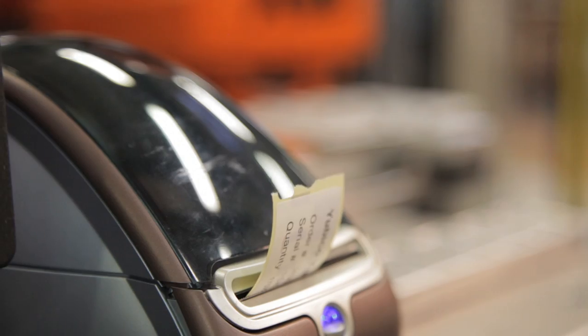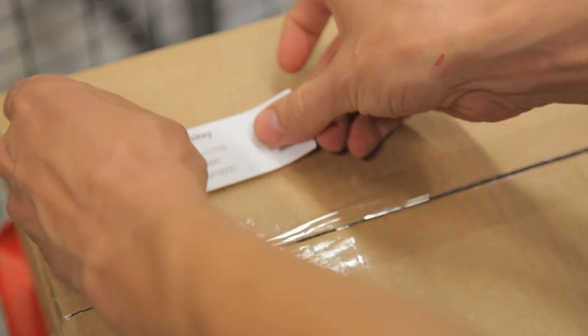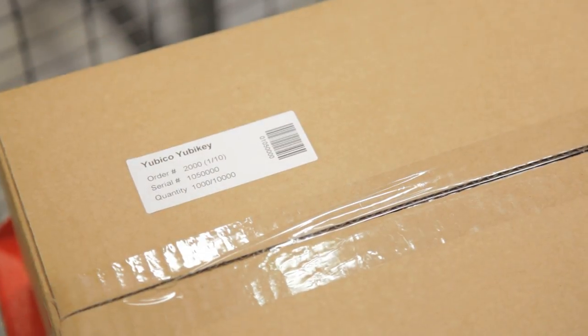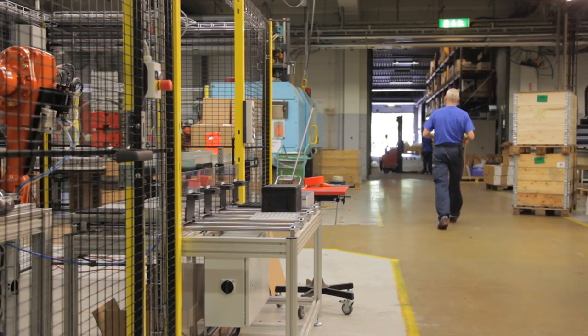For every carton with 1,000 YubiKeys, a label including order information is printed. The finished carton is then ready to be handed over to the shipping department for direct shipment to customers.